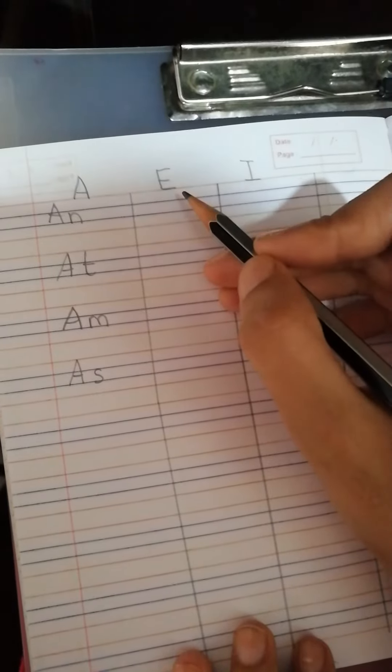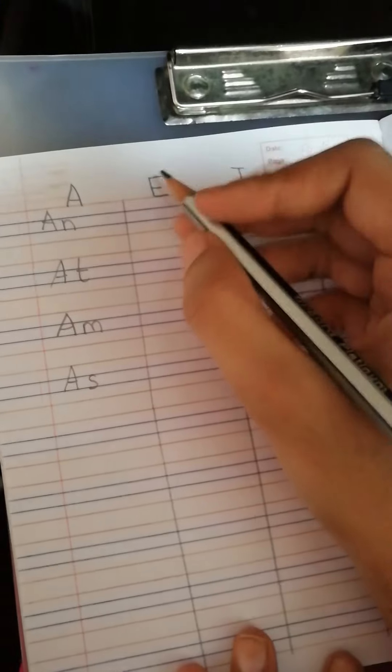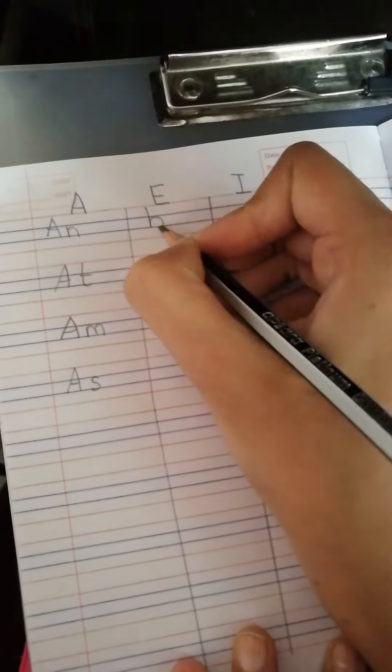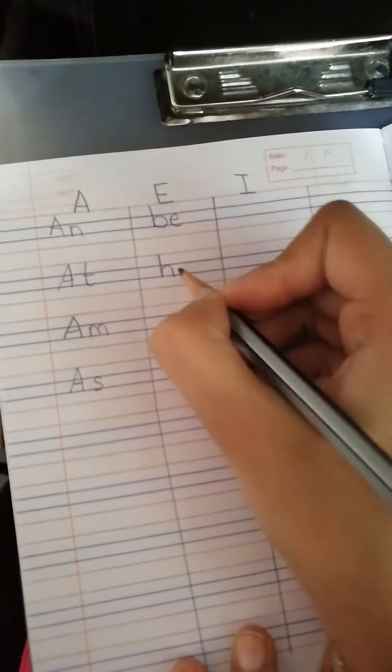Now which words have we learnt that has vowel E in it? Let us write them. We know the word B, E, be. H, E, he.